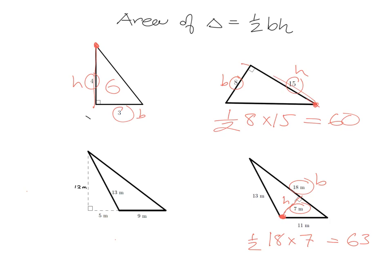There's one other situation: if we take 9 as the base, we need to go to the corner opposite and come directly down at 90 degrees to find the height. In this case the height actually sits outside the triangle — we measure how far that corner is above the base line, and the answer is 12. This isn't a problem; the area is still half times 9 times 12. Half of 12 is 6, and 6 times 9 is 54. So whenever the height falls outside the triangle, just treat it the same way — height is simply how high that corner is above the base.